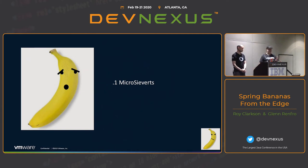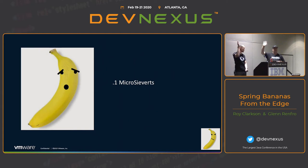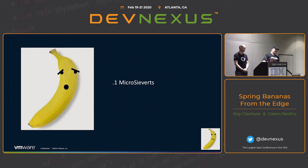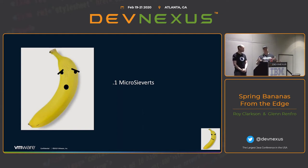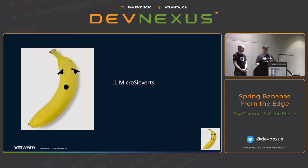Bananas are mildly radioactive — did you know that? They pick up potassium, which is somewhat similar to uranium, so they get it naturally. A banana is 0.1 microsievert. Does that mean I stop eating bananas? No. So long as you get them from a reputable source, your bananas are safe, nutritious, and they taste good. They're only one ten-millionth of a sievert.